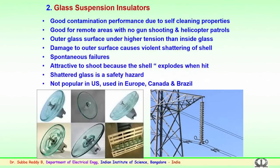We will now look into the importance of glass insulators and how they are manufactured in the industry. The suspension glass insulators are used like porcelain or ceramic insulators for transmission and distribution purposes. These insulators have very good contamination performance because of self-healing or cleaning properties. Glass insulators are very good for remote areas where gun shooting or helicopter patrols are not regular.